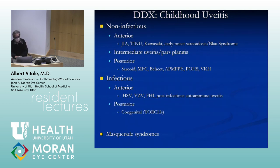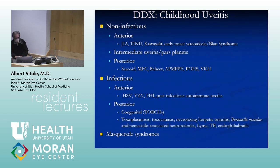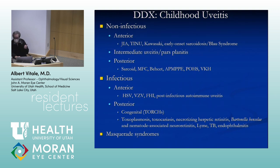Posterior infectious uveitis includes the congenital TORCH infections, Bartonella, hematoma-associated disease, Lyme, endophthalmitis, and TB depending on where you live. Masquerade syndromes are critically important in children — the most important being retinoblastoma. Other systemic diseases kids get that can present in the eye include leukemia.